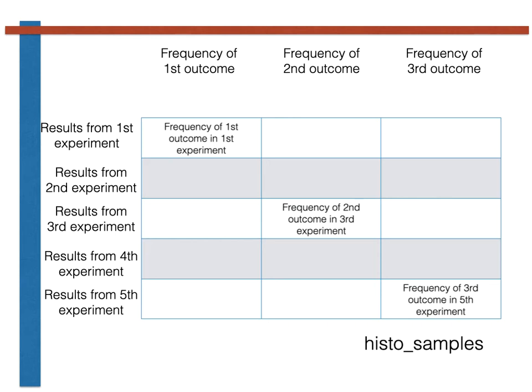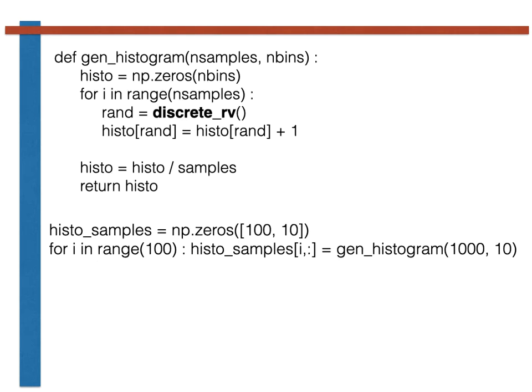With that understanding of this array in place, let's go back to the code that we had before. This first line here sets up histosamples so that it can hold the results from the hundred experiments that we will perform.